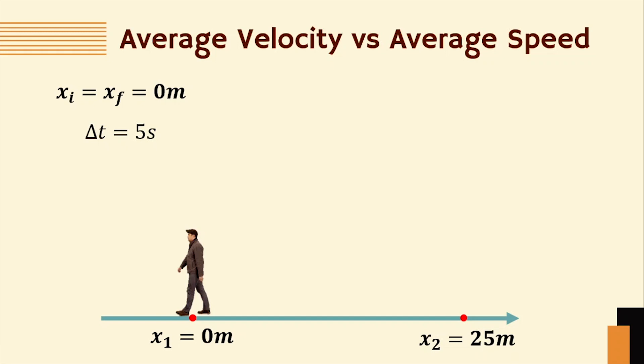To solve for your average velocity, we use the formula average velocity equals delta x over delta t, or that is equal to 0 meters over 5 seconds. So your average velocity is 0. There is no displacement because there is no change in position.